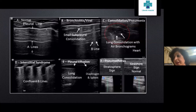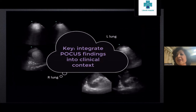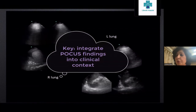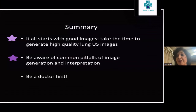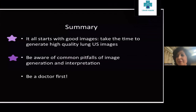In pneumothorax you will not see the seashore sign; you'll see the stratosphere sign instead. The key is to integrate point-of-care ultrasound findings into the clinical context, because a similar appearance with a different history leads to a different diagnosis. Take a proper history — that's most important. Start with high-quality ultrasound images, be aware of common pitfalls in image generation and interpretation. These are all indirect signs, so pick everything up, integrate it, and make the diagnosis. Be a good clinician first. Thank you.